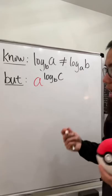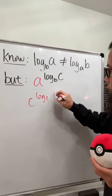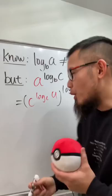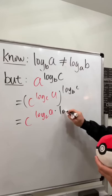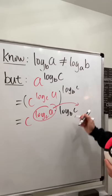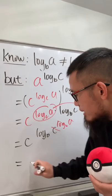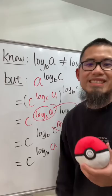Here's the proof: write a as c^(log_c(a)) — the c and log base c cancel, leaving a. Raise both sides to the log_b(c) power. Multiply the powers: we get c^(log_c(a) · log_b(c)). Move log_c(a) to become the exponent base, giving c^(log_b(a)). So a^(log_b(c)) = c^(log_b(a)).